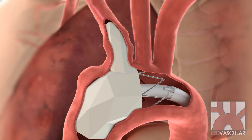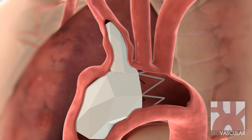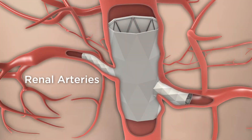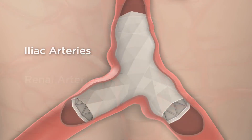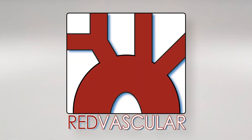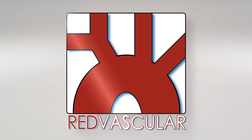At the end of the procedure, the delivery tube and guide wires are removed. The Red Vascular Branch Endograft System is also well-suited for treatment of aortic aneurysms involving the renal arteries, the common iliac arteries, or any other major branch of the aorta, including the superior mesenteric or hepatic artery.